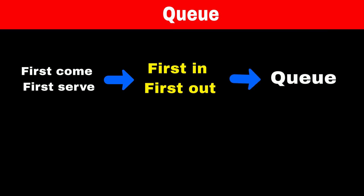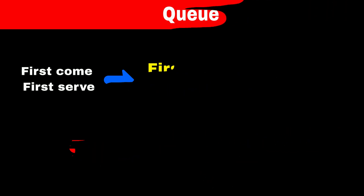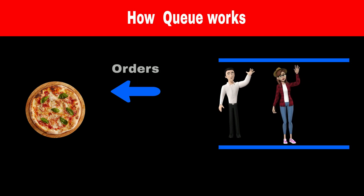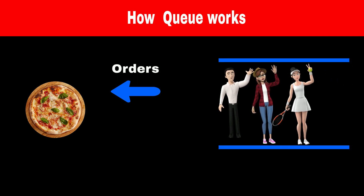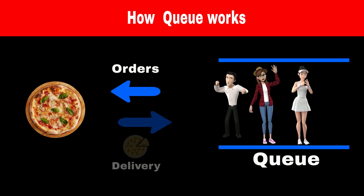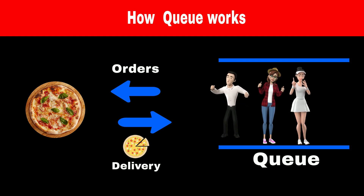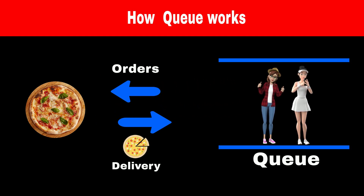Consider a queue as a line in front of any restaurant — whoever is in the front of the line will get the food delivery first. Now assume we got an order from Ross, Monica, and Rachel. We will add them into the queue. Ross is now at the front of the queue, so whenever the first pizza is ready, we will deliver it to Ross and then remove him from the queue.